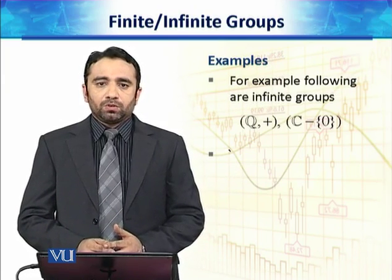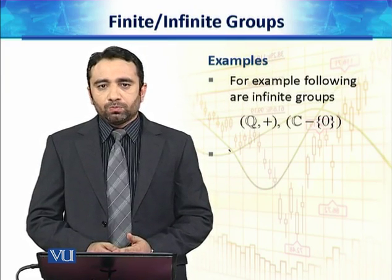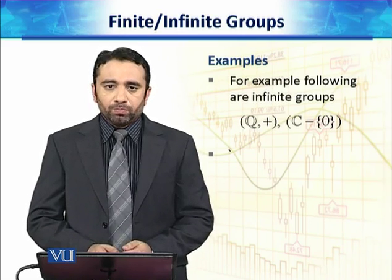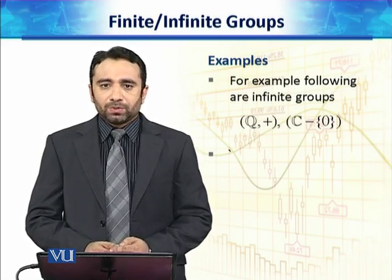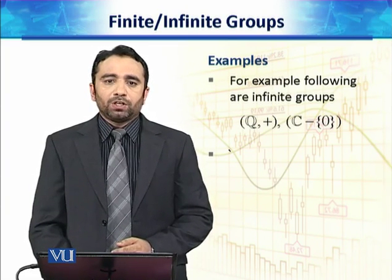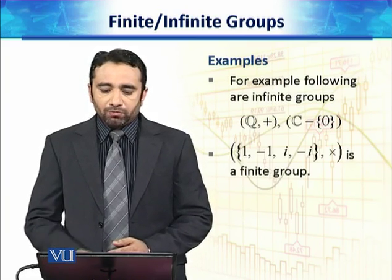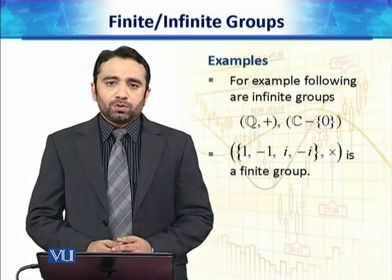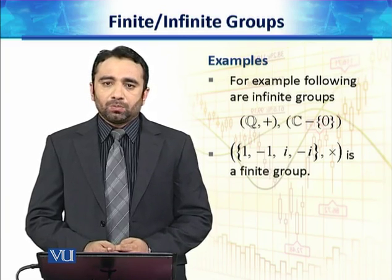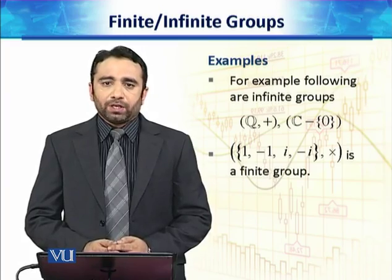Then we have a couple of examples of the finite and infinite group. For example Q under the operation addition is an infinite group. And complex numbers C minus 0 under the operation multiplication is again an infinite group. On the other hand, the group of {1, -1, i, -i} under the operation multiplication, which we have already seen that this is a group, is a finite group.